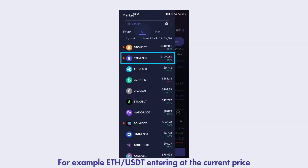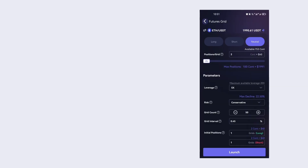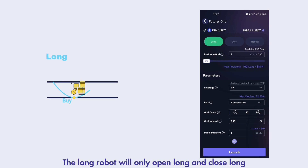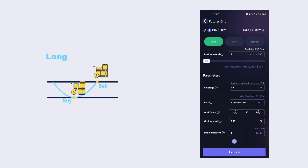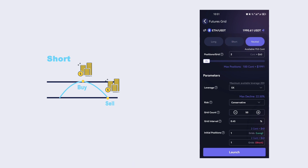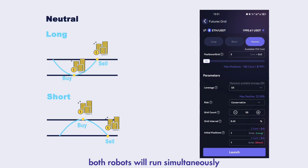For example, ETHUSDT, entering at the current price. Next, let's decide the order's direction. The long robot will only open long and close long, while the short robot will only open short and close short. By selecting the neutral mode, both robots will run simultaneously, operating independently without interference.